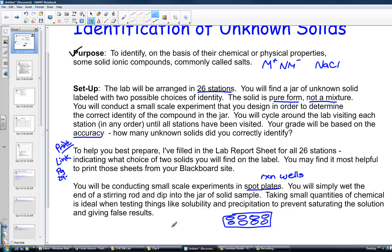Let's say I arrive and the jar has a code A1. You'll see it has two possible choices on the label: NaCl or NaNO3. If you're looking ahead and have printed your lab report sheet, you'll see the very first station is labeled A1 with sodium chloride or sodium nitrate.